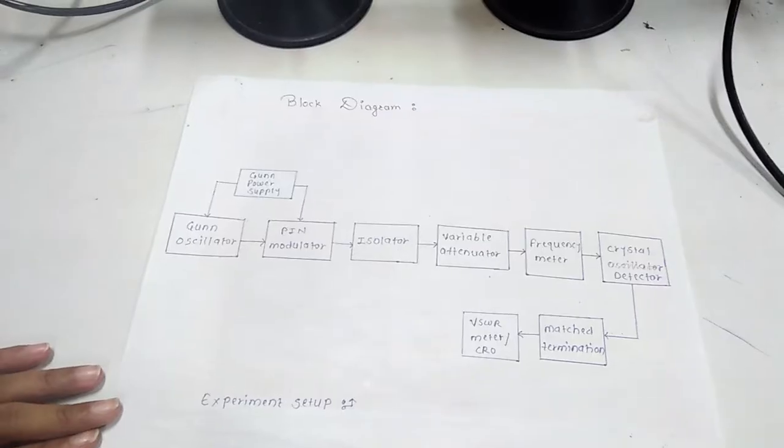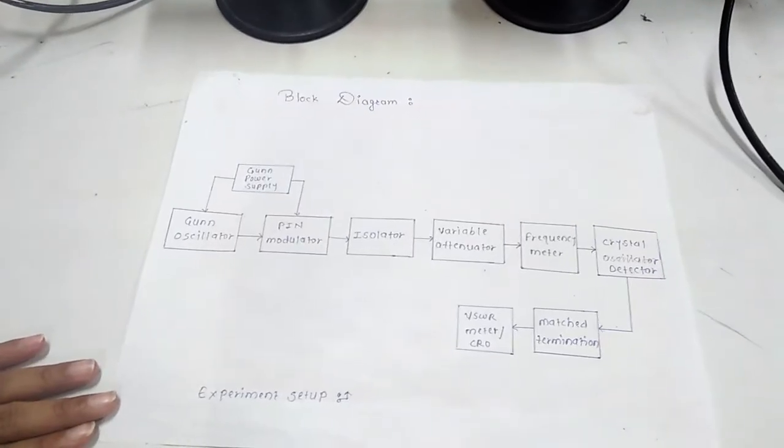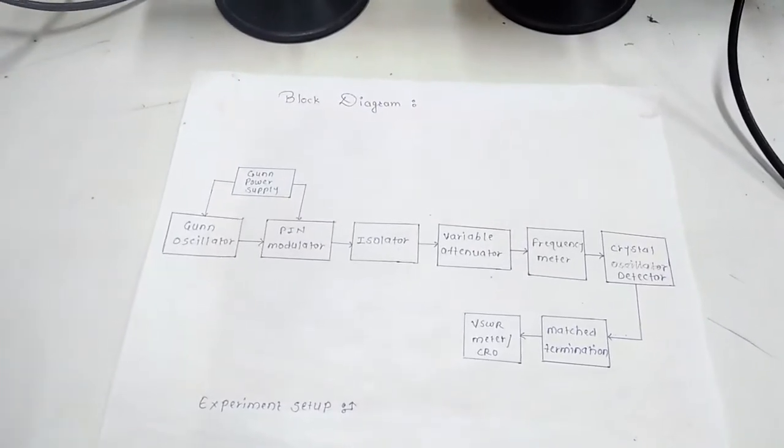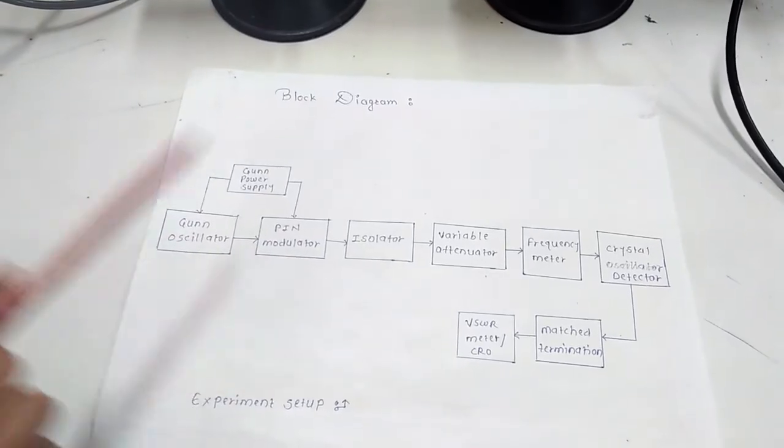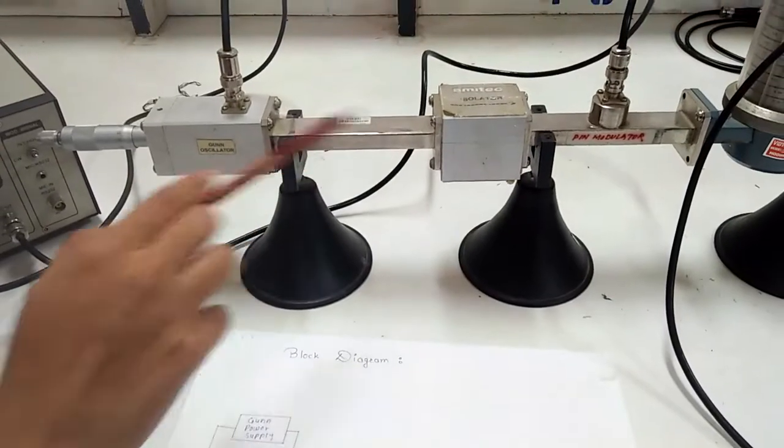It works in negative resistance region and is used for low power oscillations. PIN modulator is used for producing continuous amplitude modulated RF signal. It works in forward bias condition.